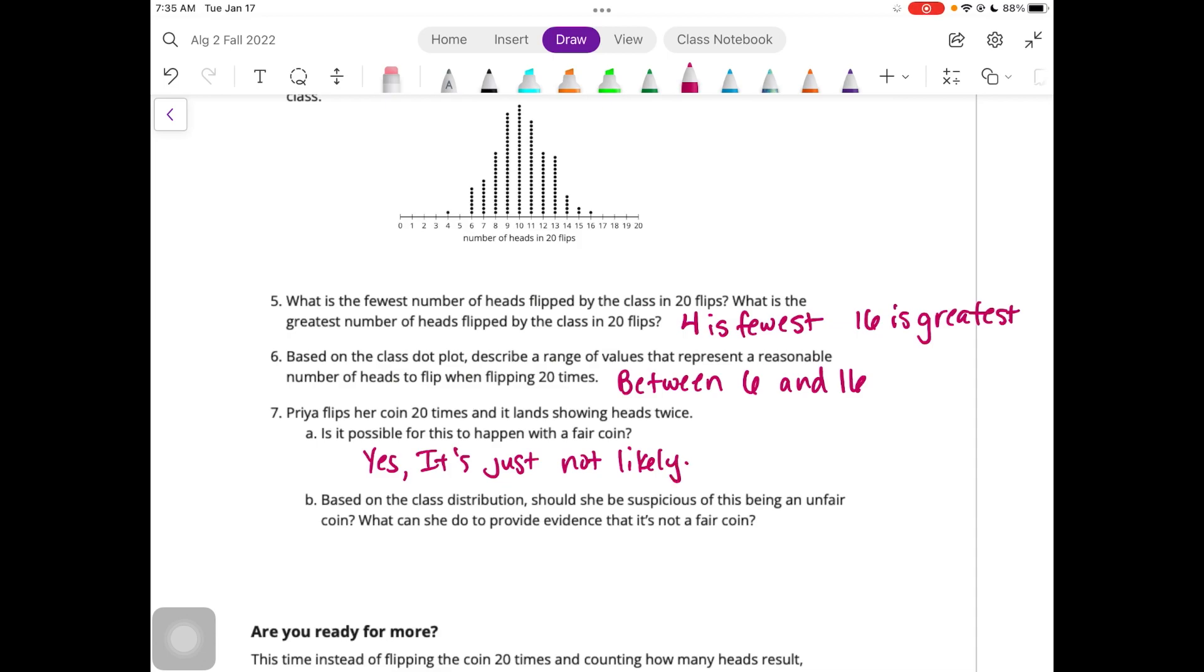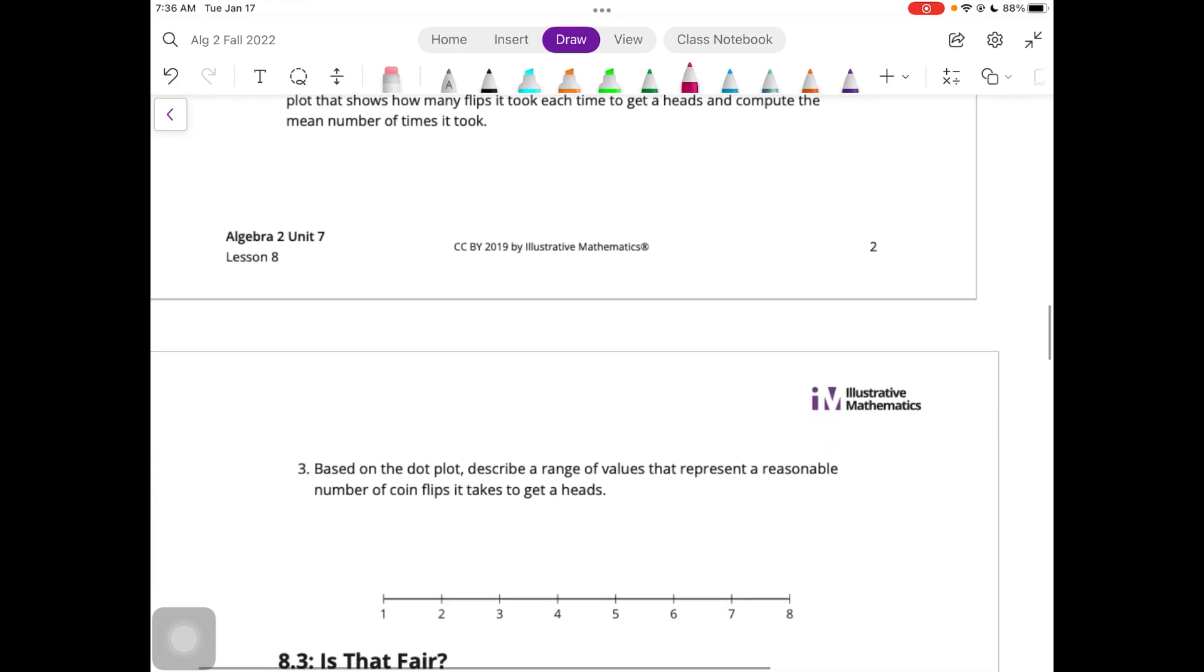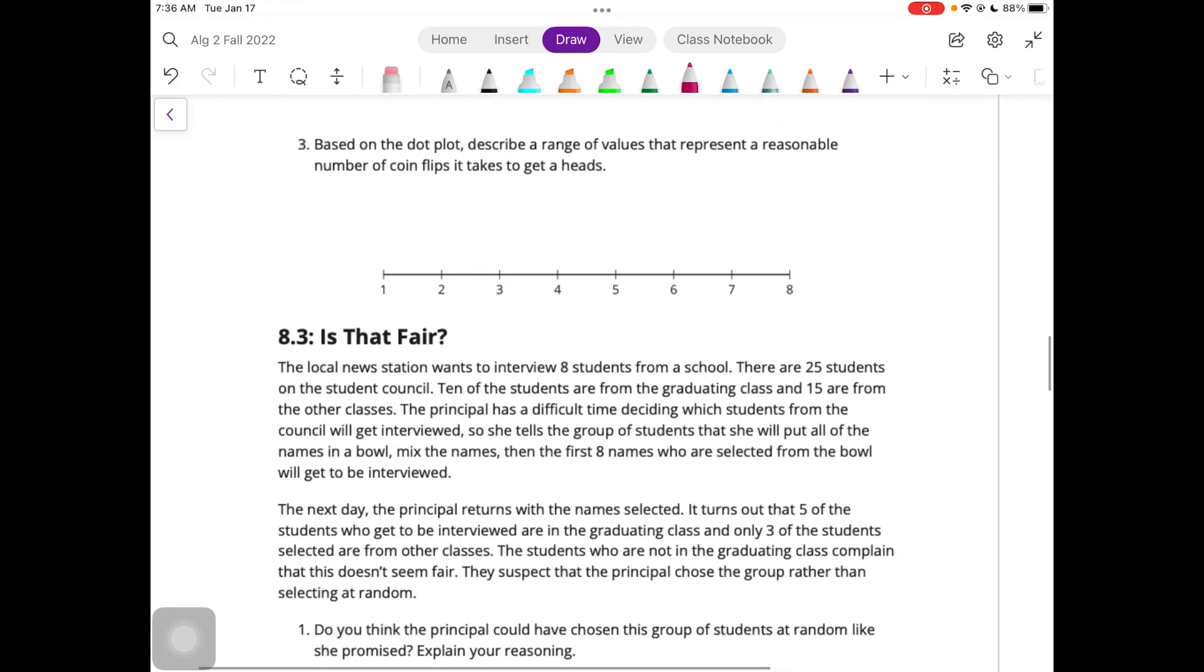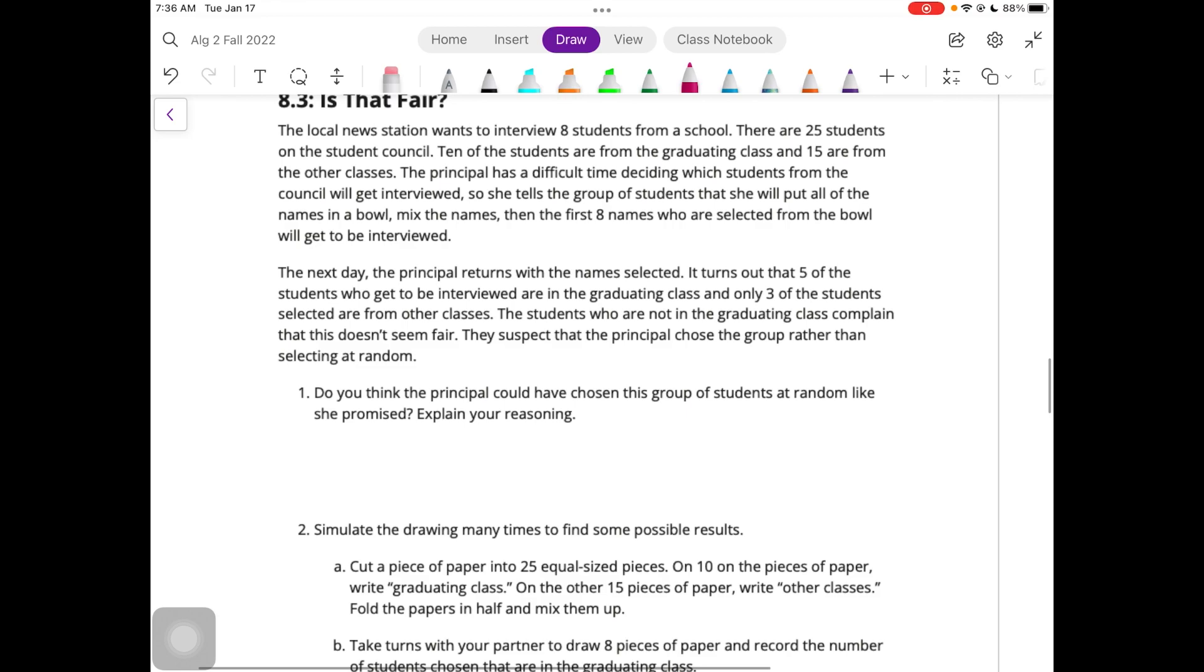Based on the class distribution, should she be suspicious of this being an unfair coin? What can she do to provide evidence that it's not a fair coin? She might be suspicious. That would be fine. She could try flipping it 20 more times and then do that multiple times and see if it's consistently low. If it is, then it's probably not a fair coin. We are going to skip are you ready for more and take a look at is that fair. We're not going to do that either.